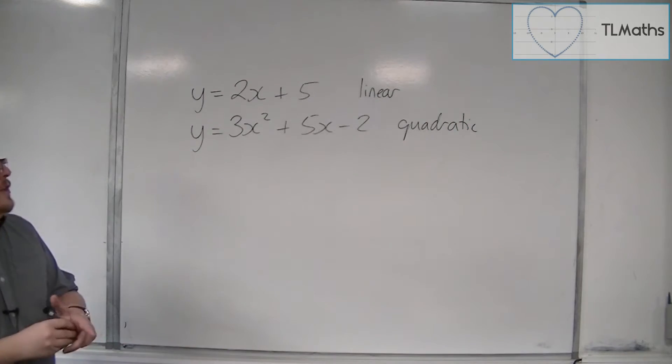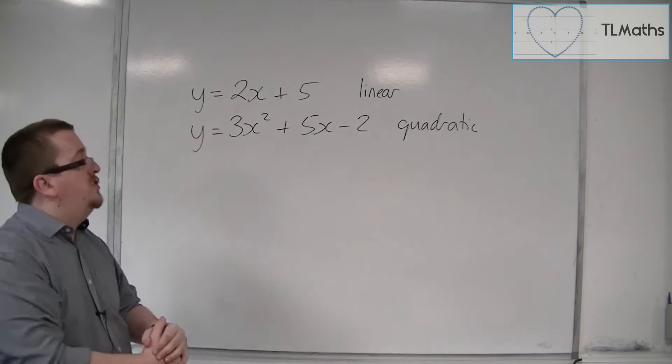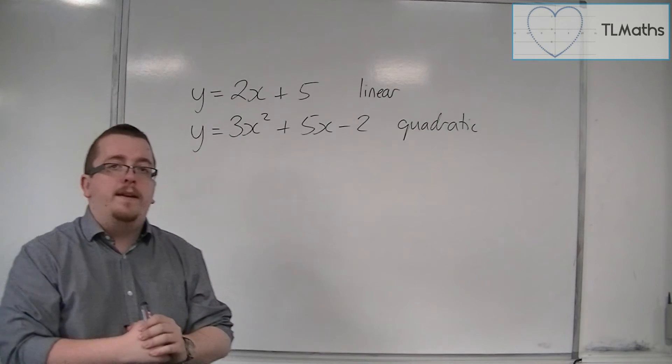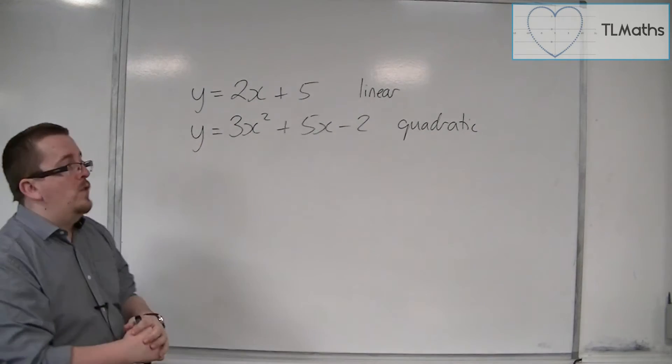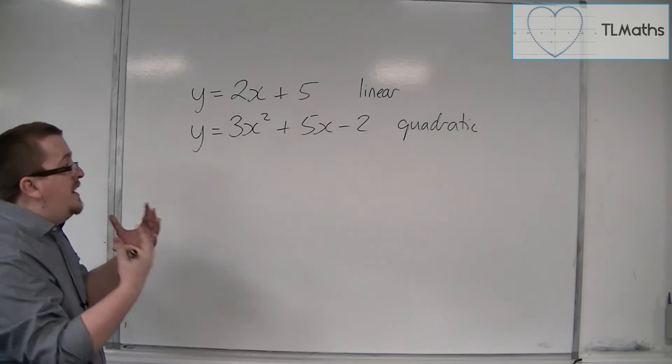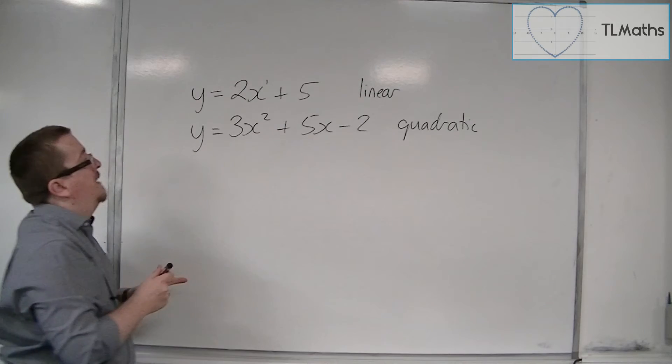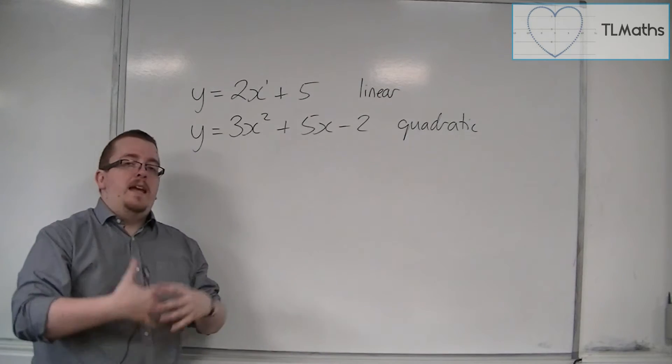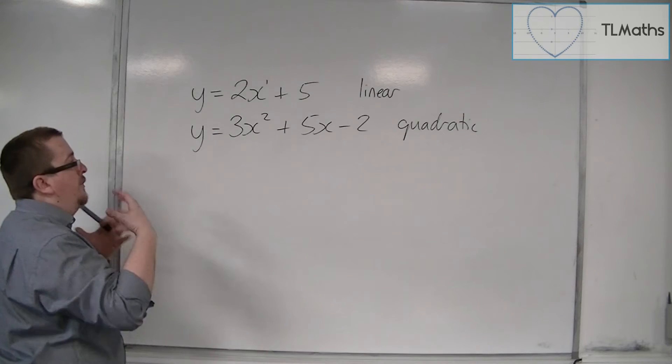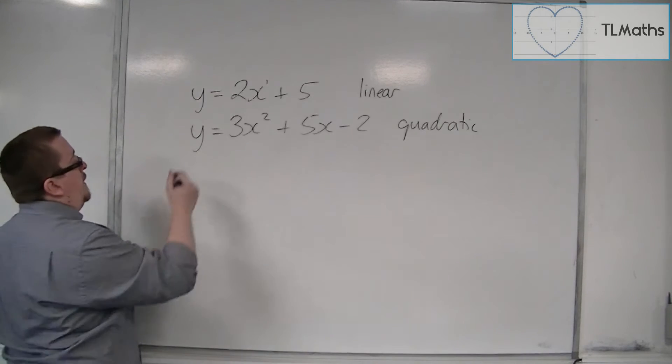Because we look at the highest power of x, in this case 2, go right, it's got an x squared in it. So it must be quadratic. The next stage up, because we've got here a power of x to the 1, and here we've got an x squared, it makes sense that the next one would have an x to the 3 in it, a cubed.